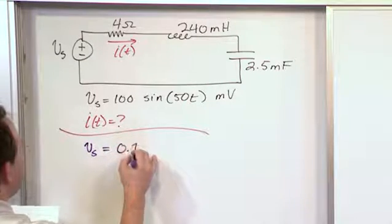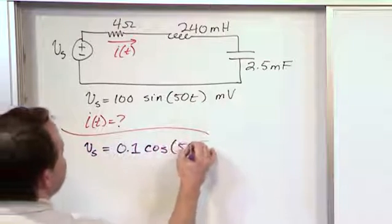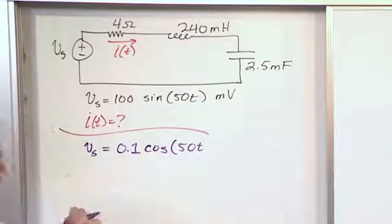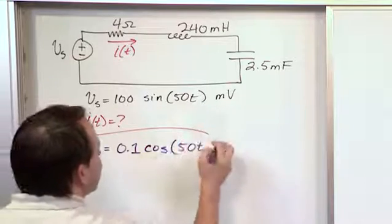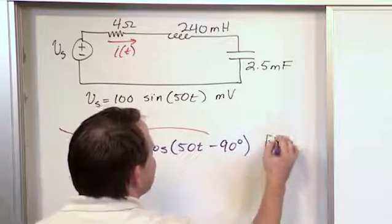0.1, because now we're gonna deal with volts, we're gonna change this to a cosine, 50T, the frequency all stays the same, but in order to go from sine to cosine you have to subtract 90 degrees. And this is now in volts, not in millivolts.